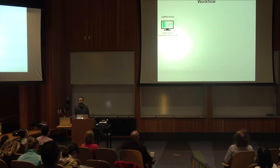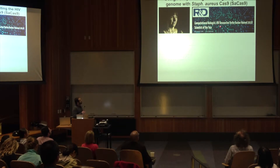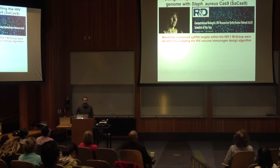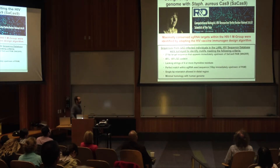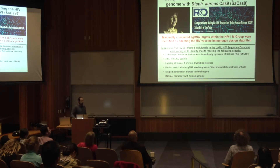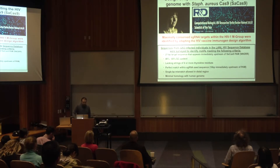To design the guide RNAs, we teamed up with Dr. Betty Korber at Los Alamos National Laboratory in New Mexico. Dr. Korber was recently named Scientist of the Year by R&D Magazine. She identified maximally conserved guide RNA target sites within the HIV-1 M group by adapting her HIV vaccine immunogen design algorithm, surveying over 3,000 sequences from infected individuals. She came back to us with over 400 different potential guide RNAs ranked by conservation, including subtype-specific guides for subtypes B and C.